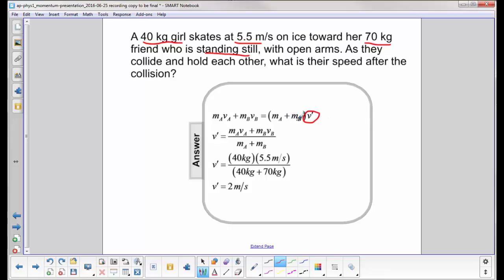Divide both sides by MA plus MB, and then we substitute in for the variables, and we come up with the final velocity of 2 meters per second of the combined system.